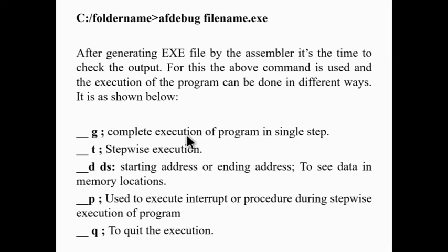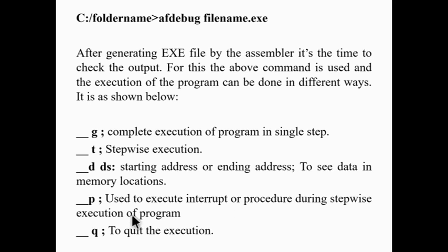G — for complete execution of a program in a single step. T — for stepwise execution. D DS:[starting address]-[ending address] — to see data in a memory location. P — used to execute an interrupt or procedure during stepwise execution of a program. Whenever checking for an interrupt in stepwise execution, use P. To quit the execution, use Q (quit).